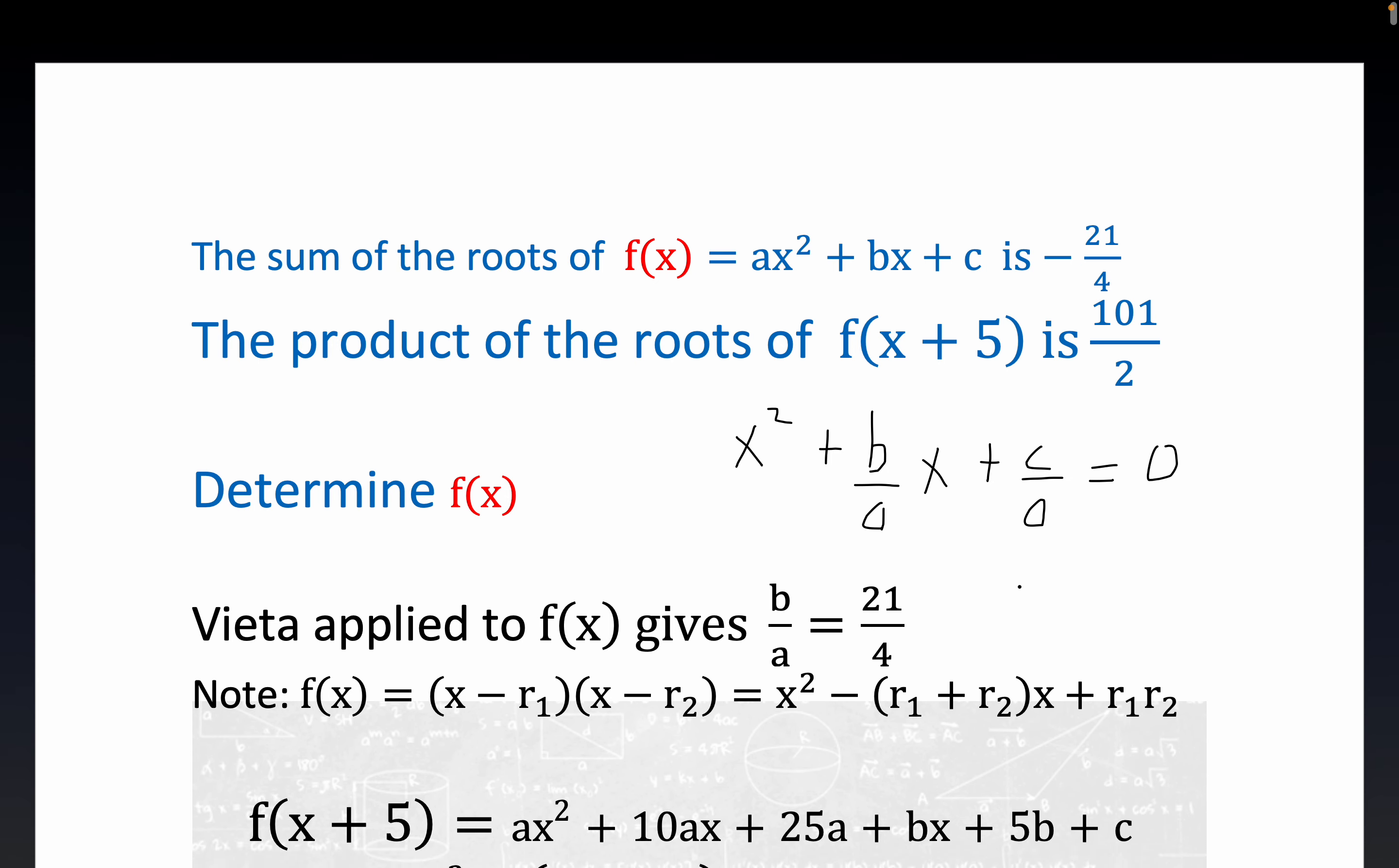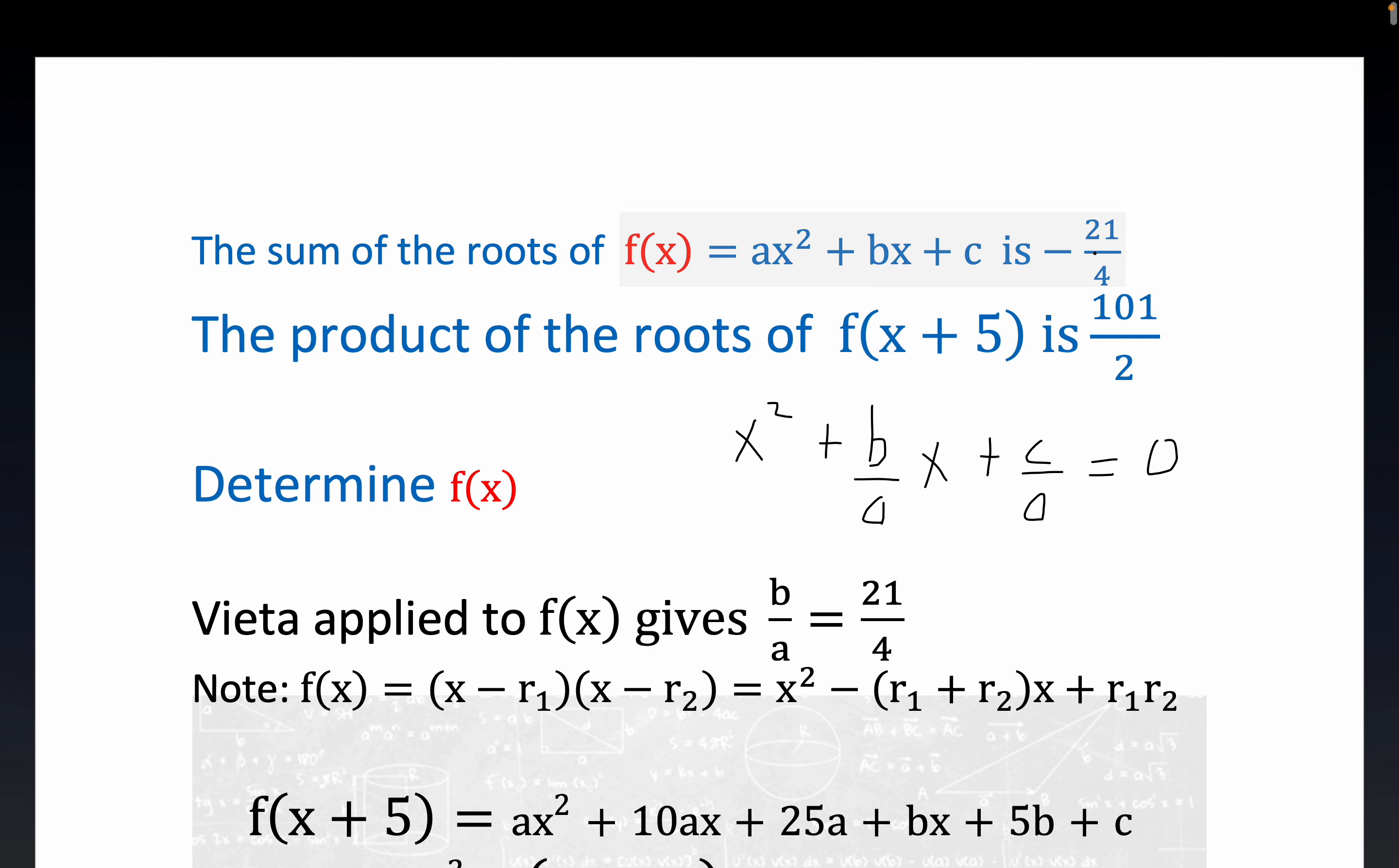Now just to show you how we can make some progress here, we're given that minus the sum of the zeros of the original expression is minus 21 over 4.